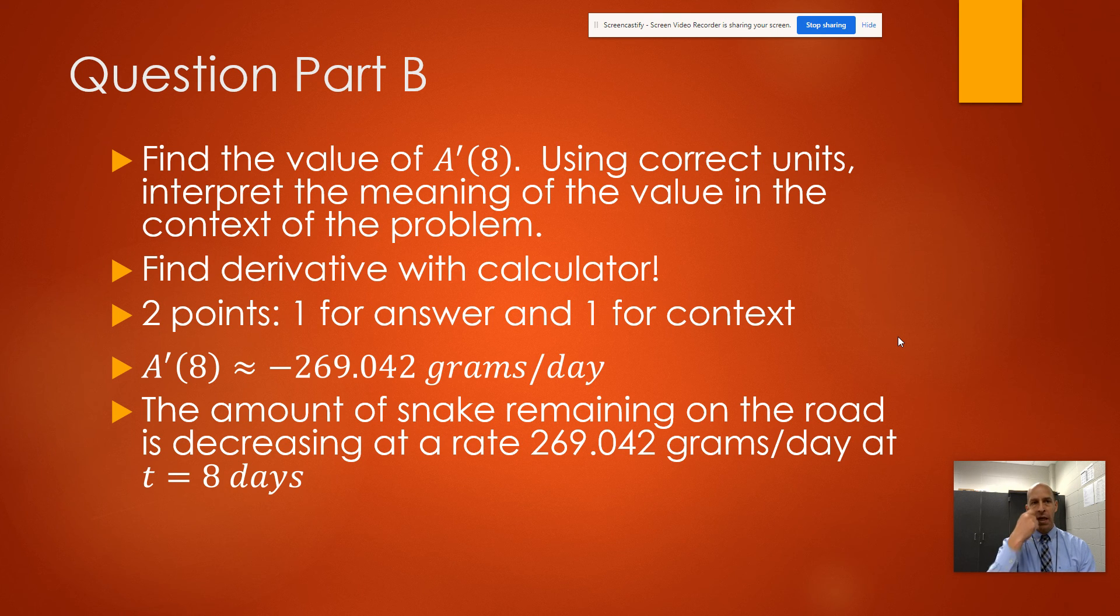In the context of this particular problem, that means the amount of snake remaining on the road is decreasing at a rate of 269.042 grams per day at t equals 8 days. You need all those components to get that second point. If you say decreasing, make sure you don't include the negative.